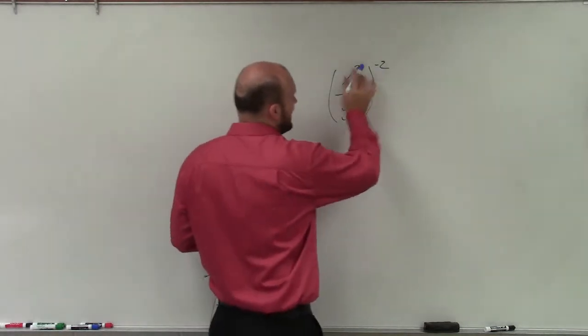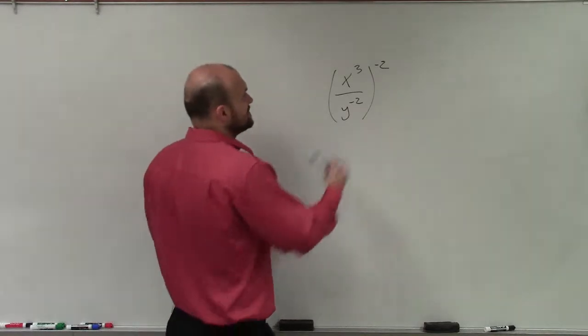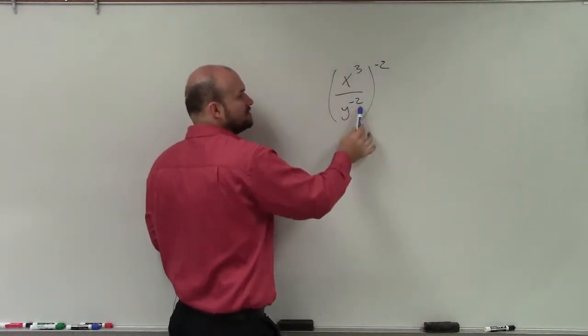So you can see here, I have a quotient raised to a power, therefore I can use the power to quotient rule, which basically tells me that I can apply this power to the term in the numerator as well as the term in the denominator.